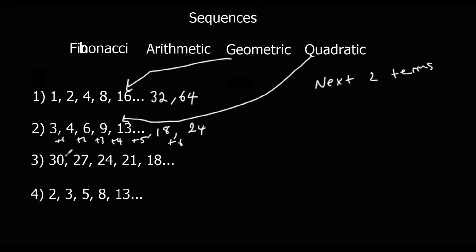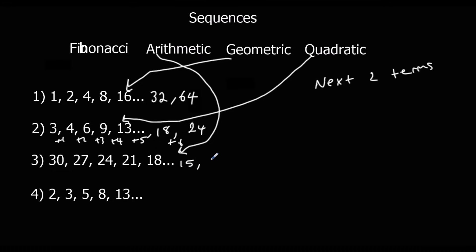The next sequence was 30, 27, 24, 21, 18. It has the same difference every time — going down in threes — so it's arithmetic. The next two terms are 15 and then 12.